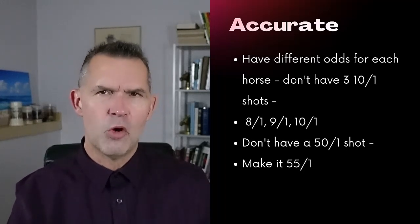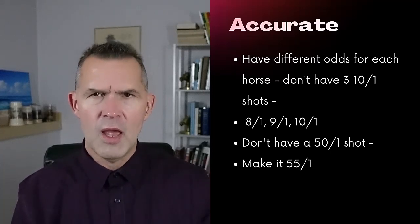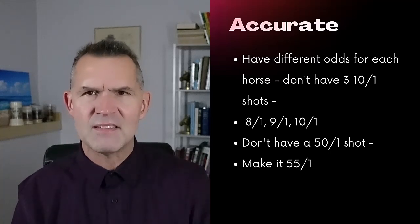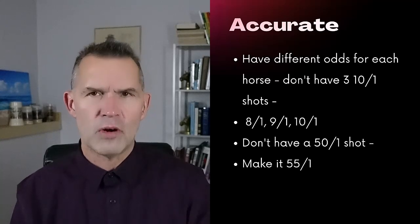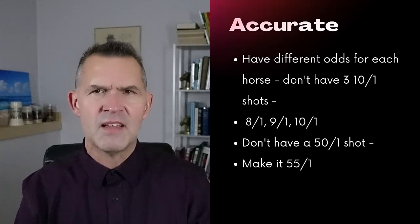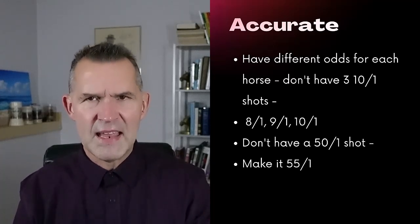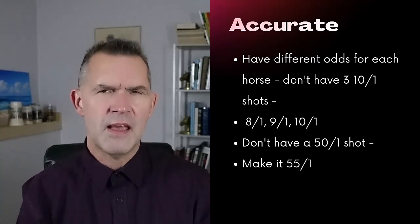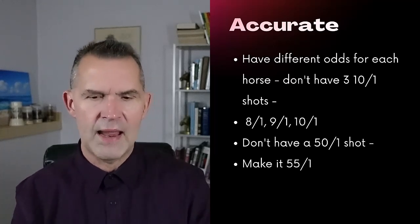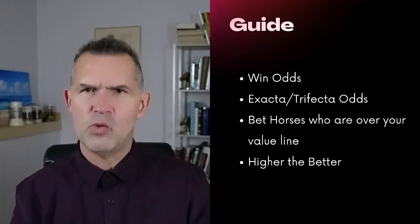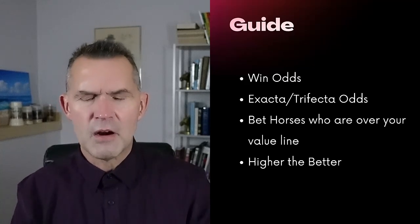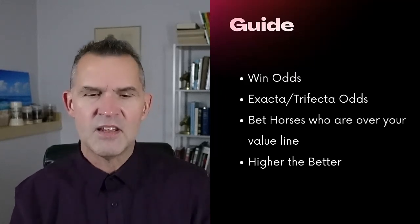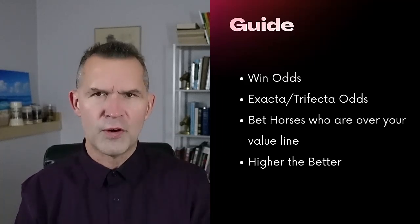This is just a one-race sample, but over the long haul, doing this will help you pick some winners. Sometimes you'll do this and no horse goes over your value line — that's a race you want to pass on. You want to be very precise: don't have three 10 to 1 shots — distinguish between 8 to 1, 9 to 1, and 10 to 1. A morning line might lump three horses at 10 to 1, but a value line demands more accuracy. If a horse is 50 to 1, make them 55 to 1 to lower that percentage and put better odds on another horse to get a bettable number.